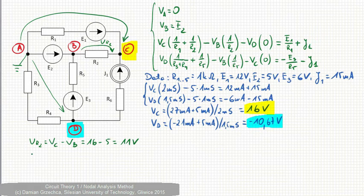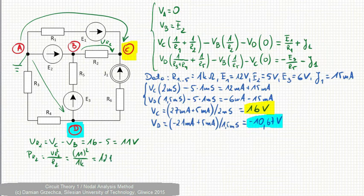it is quite easy because PR2 is UR2 squared over R2, which is 11 squared over 1 kOhm. It is 121 mW. That's the power dissipated by R2 using voltages we have calculated using nodal analysis method.